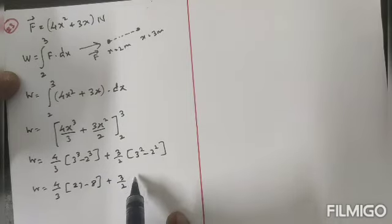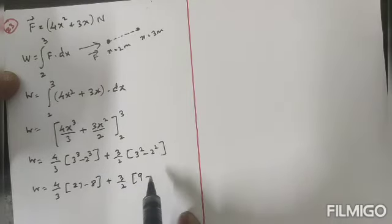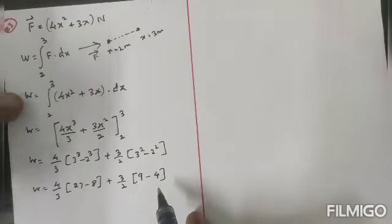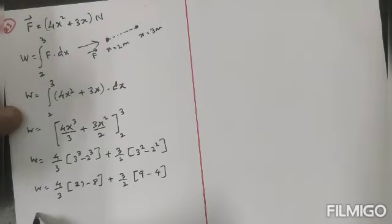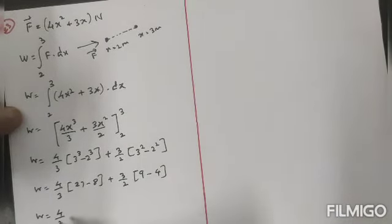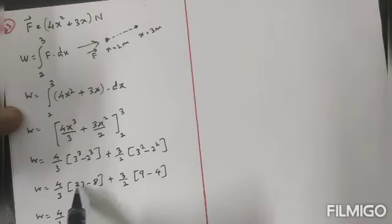3² is nothing but, sorry, 3³ that is 27 minus 2³ that is 8, then plus again 3/2, 3² is 9, 2² is 4. Therefore,